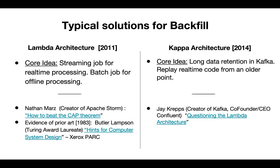The typical solutions for the backfill problem are either Lambda or Kappa architectures. The core idea of Lambda is that you would write a batch job for the offline part and have a real-time job — so basically two kinds of jobs. In the Kappa architecture, the idea was to keep the data in Kafka longer, so you don't need a separate batch job — you can just rewind back in time and replay, getting the same real-time job processing backfill as well.